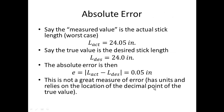Let's talk about absolute error. Absolute error is the difference between some measured value and some true value. As an example, take our worst-case actual stick length of 24.05 inches - the true value is the desired stick length. The absolute error is then 0.05 inches. This is not a great measure of error because it has units and it also relies on the decimal point location of the true value.